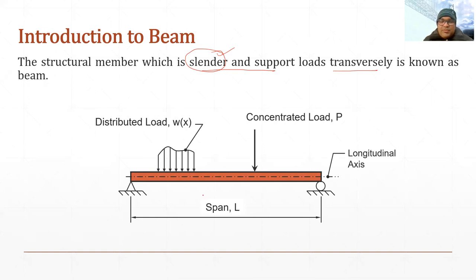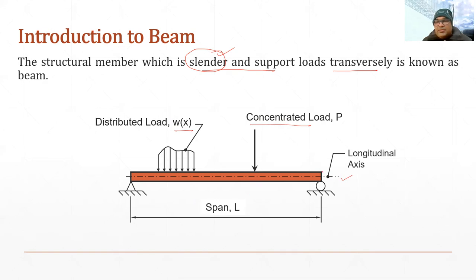This is a beam, which is a simply supported beam, and it may be subjected to some distributed load or concentrated load, or maybe some uniformly varying load. Now we are talking about the axis. The axis which passes through the centroidal axis of the beam along the longer dimension — you can see this is the axis passing along the centroid of the beam and along the longer side. That axis is known as the longitudinal axis.